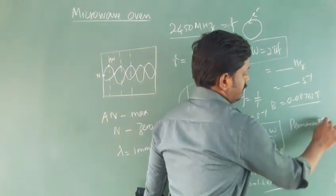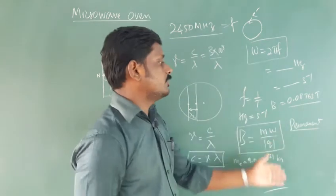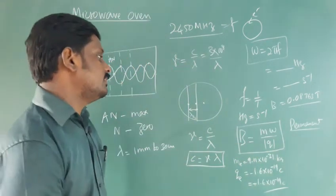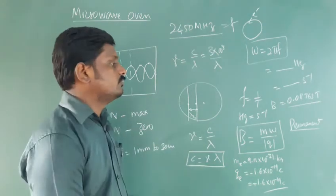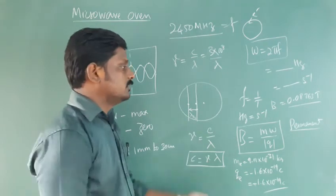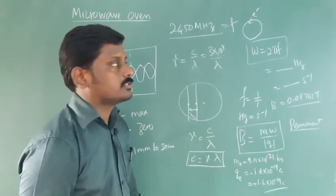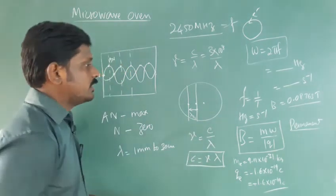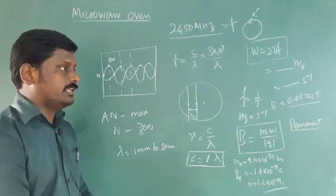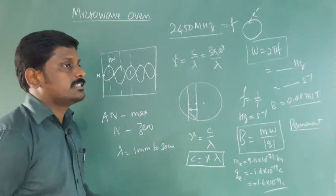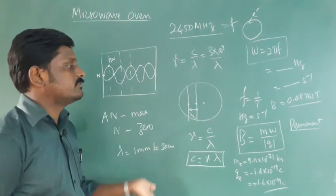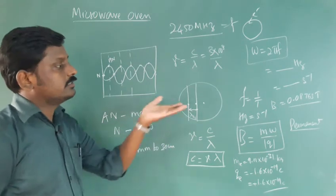This magnetic field can be produced using a permanent magnet. This magnetic field is enough to cook the food, because the microwave is absorbed by the water molecules present in the food. If you are cooking, the food should have some water molecules. Inside the water, there is an H₂O molecule. The bond between hydrogen and oxygen breaks, and it produces heat. That heat is used to cook the food via the varying electric field.